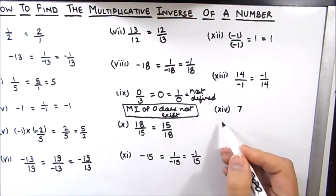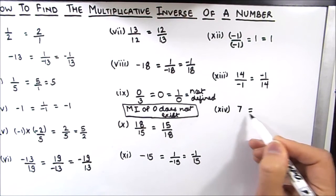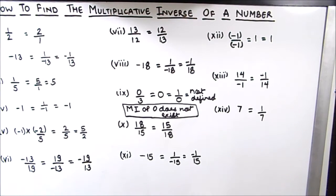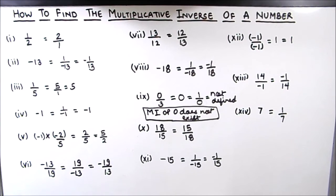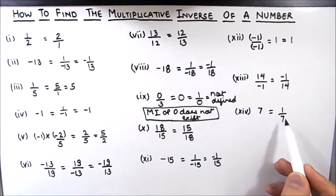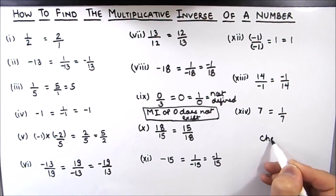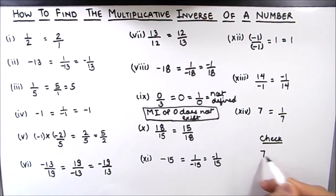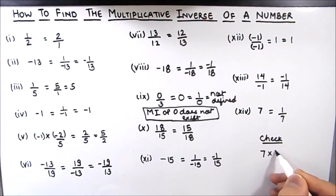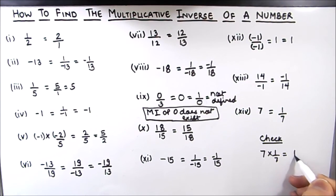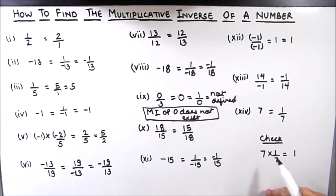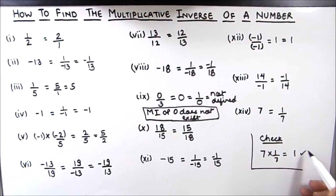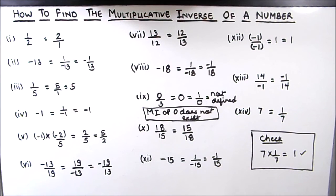Our last number is 7 and its multiplicative inverse or reciprocal will be 1 by 7. Finding the multiplicative inverse is very easy. There is one more thing I want to tell you: if you want to check whether your multiplicative inverse is correct or not, you can do a simple check — when you multiply the number with its multiplicative inverse you should get the answer as 1. As long as you are getting 1, your multiplicative inverse is correct.